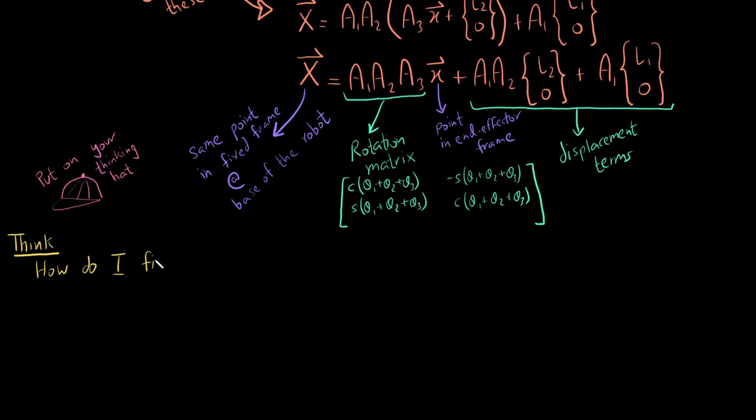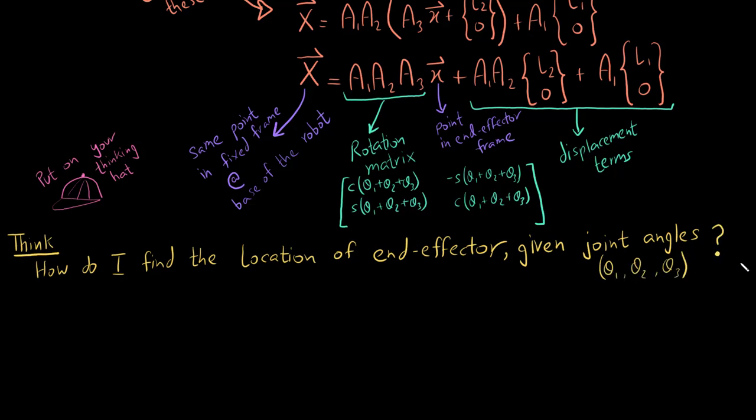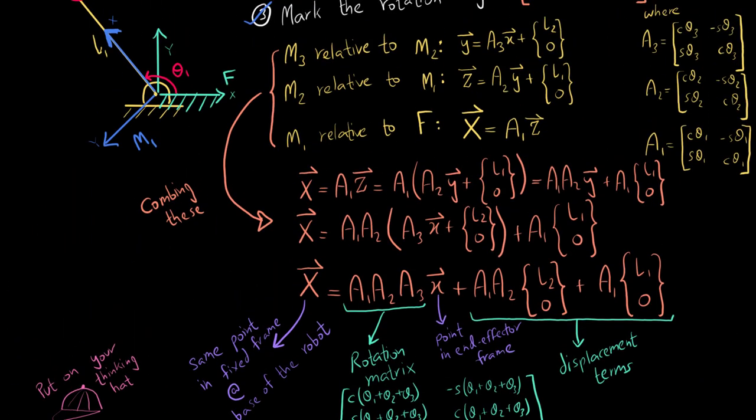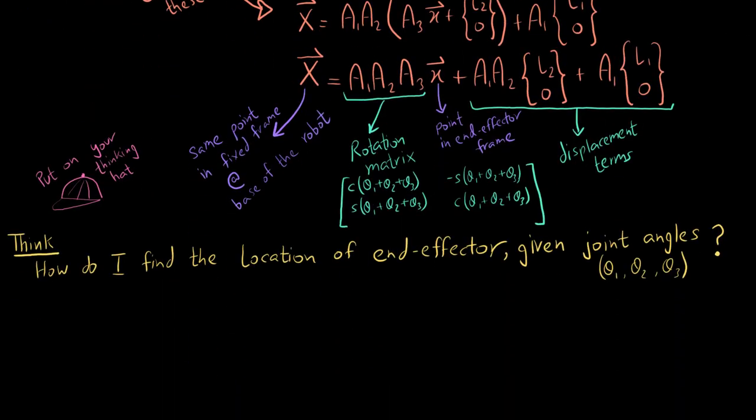So the question is, how do I find the location of the end effector in the fixed frame given the robot parameters? The robot parameters are the lengths of the links which I marked as a1 and a2, and the joint angles theta 1, theta 2, theta 3.